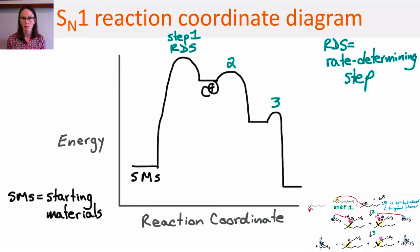Departure of the leaving group and generating that high energy carbocation is the rate determining step of the reaction. Notice that just one molecule involved in that rate determining step, unimolecular.